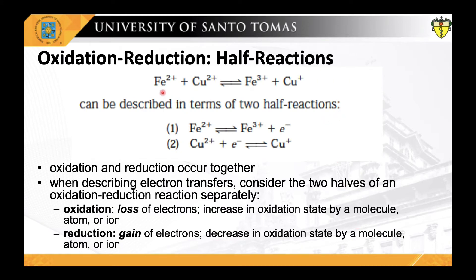Let us now look at a particular example: the oxidation of ferrous ion by cupric ion. Although oxidation and reduction must occur together, it is convenient to consider the two halves of a redox reaction separately. Oxidation is defined as the loss of electrons — thus, with the loss of electrons, ferrous (Fe²⁺) will have an increase in oxidation state and become ferric (Fe³⁺), because its charge increases from +2 to +3.